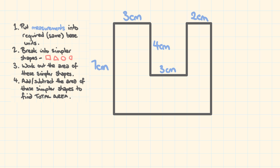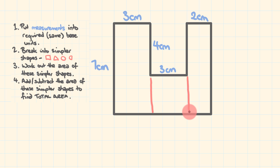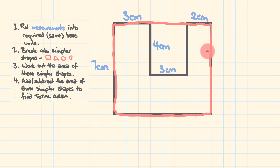For example number two, we have a very blocky, rectangular shape that looks like a U, and we're going to work out the area within it. The measurements are all in centimeters, so step one is done. For step two, we could break this into three rectangles and add them together — that's totally valid. But I'm going to do it slightly differently: I'll start with a big rectangle covering the entire shape, which I'll call rectangle one, and then take away the small inner rectangle, rectangle two. Both methods give the same answer.